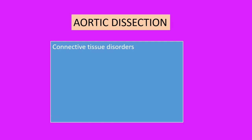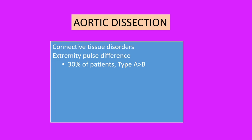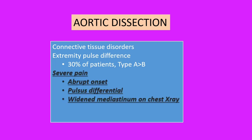In addition to acute coronary syndrome and pulmonary embolism, another clinical syndrome with acute chest pain is acute aortic dissection. These patients usually have connective tissue disorders — for example, Marfan's syndrome. On examination, they have extremity pulse differential, which is present in 30 percent of patients, more in type A aortic dissection compared to type B.